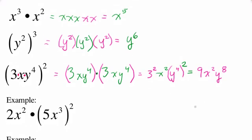Now let's do a couple of examples that apply these rules. Don't forget to use your order of operations — please excuse my dear aunt Shaniqua. There are only four steps in the order of operations. We do parentheses, then exponents, then multiplication. Here we see a multiplication but also an exponent, so we have to do the exponent first.